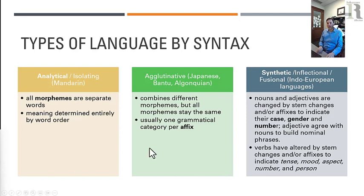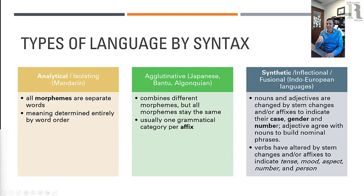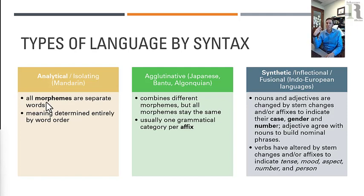Linguists organize human languages into a few different kinds. One basic way that language puts words together to make sentences can be called analytic or isolating. Here, all morphemes — that is, a specific chunk of meaning; some of them might designate a thing like a water bottle, some morphemes might designate past like 'ago' — all morphemes are separate words in an analytical language. And the meaning of a sentence is determined entirely by word order.